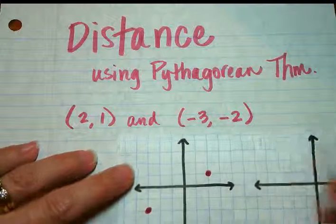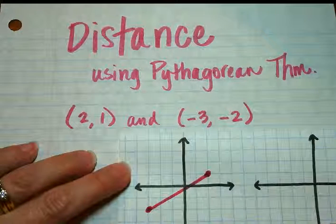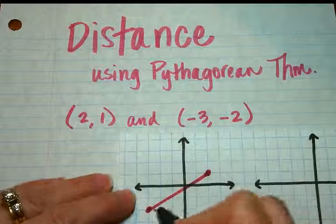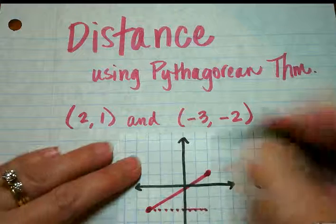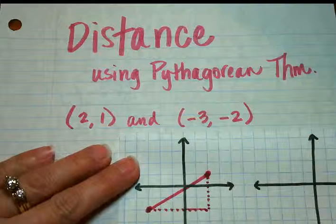And what we want to do is find the length of that piece right there, which is the distance. And what we did was we made this into a right triangle, and then used Pythagorean Theorem.